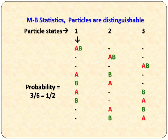In Maxwell-Boltzmann statistics, particles are distinguishable. For example, let us say particle states can be represented by 1, 2, 3, and we have particles a and b. The particle states can be occupied in 3 squared, that is 9 positions. If you want to find the probability, the probability equals the occupied space of a and b at level 3, so 3, and the remaining 6 positions. The total probability equals 3 by 6, which is equal to 1 by 2.